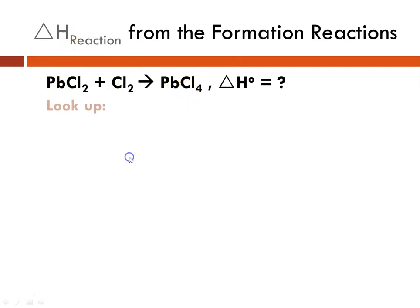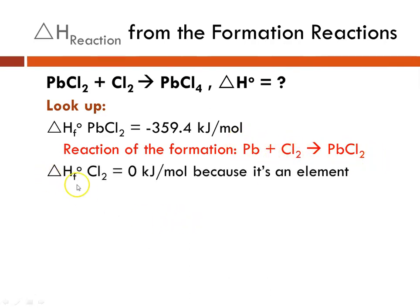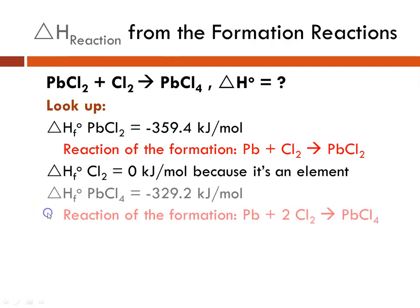Now we're going to see if we can do it using the summation equation and the individual steps. We can look up the formation of lead(II) chloride — its formation delta H is negative 359.4 kilojoules per mole. To form lead(II) chloride we would need lead and chlorine. The delta H of formation for chlorine is zero because it's an element in its elemental state. Then for lead(IV) chloride, we look it up and it's negative 329.2 kilojoules per mole.